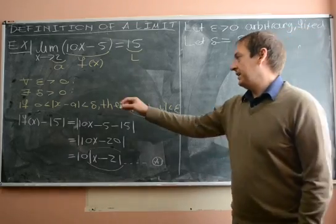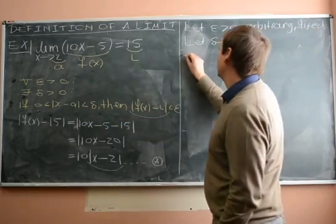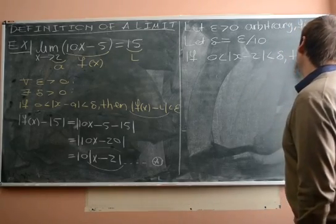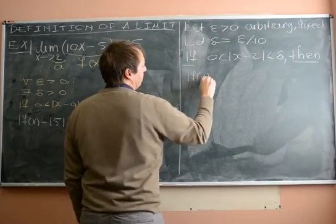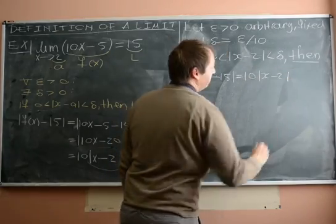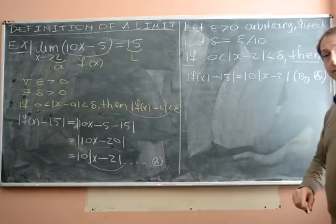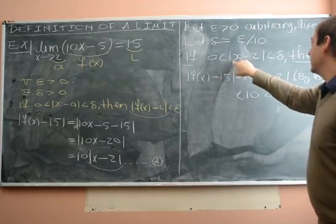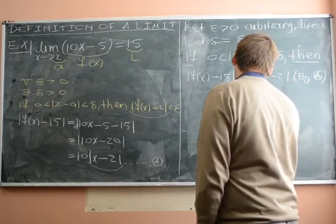Now what does the definition say? If this is true, then this is true. So that's what we have to prove. So if 0 less than absolute value x minus 2 less than delta, then what happens? f of x minus 15 is 10 absolute value x minus 2. And that's by equation A. We write here by A. So this is less than 10 times delta, because x minus 2 absolute value is less than delta. And delta is epsilon over 10.